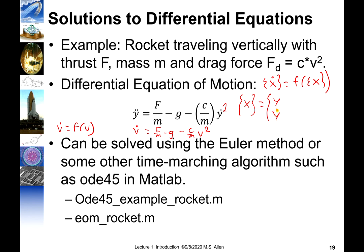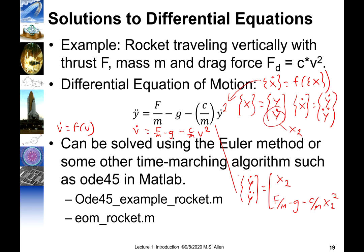So X dot becomes the velocity and the acceleration, or a 2 by 1 vector that has velocity and acceleration. We can write this equation X dot, Y dot, Y double dot. That will just be equal to Y dot, which is the second state X2. And this equation we can also write in terms of X2: F over M minus G minus C over M, X2 squared. And so that would be our equation of motion for this system. We could easily go solve that in MATLAB.